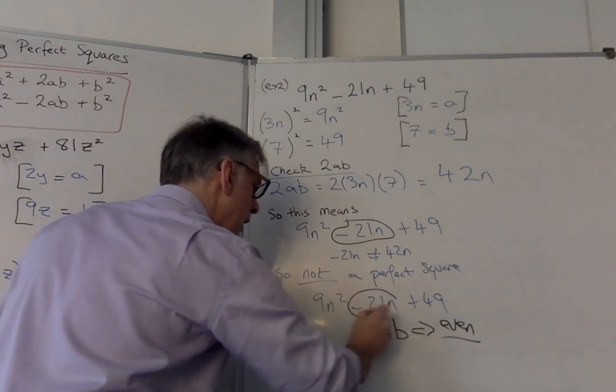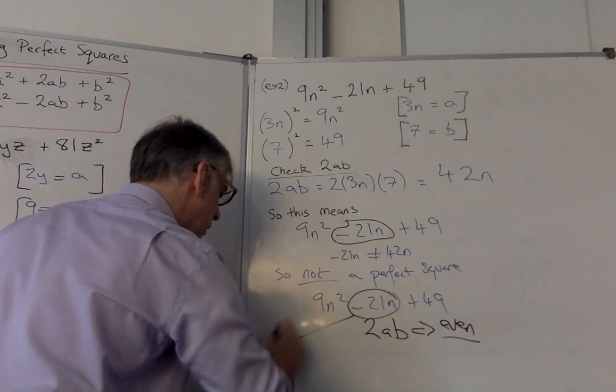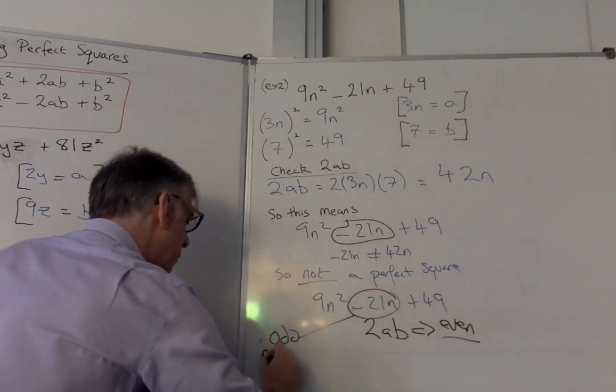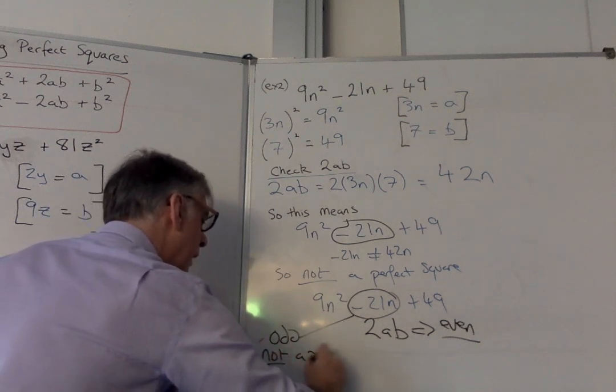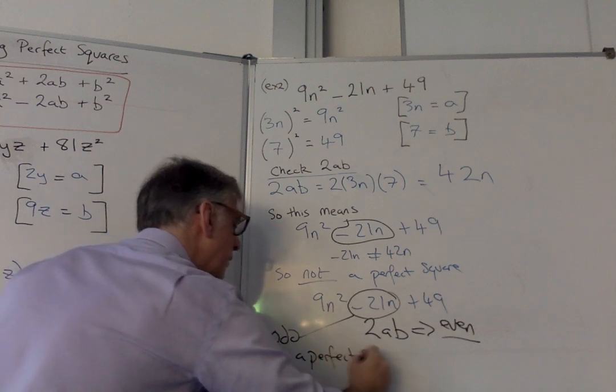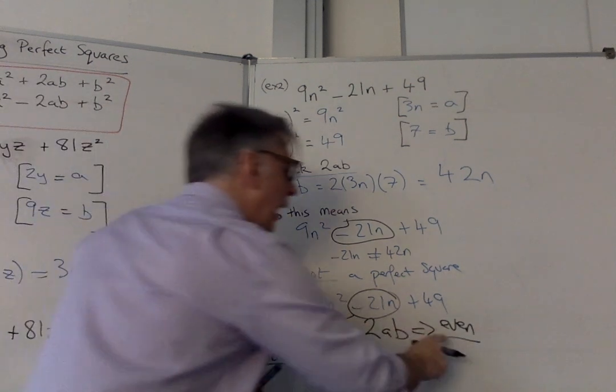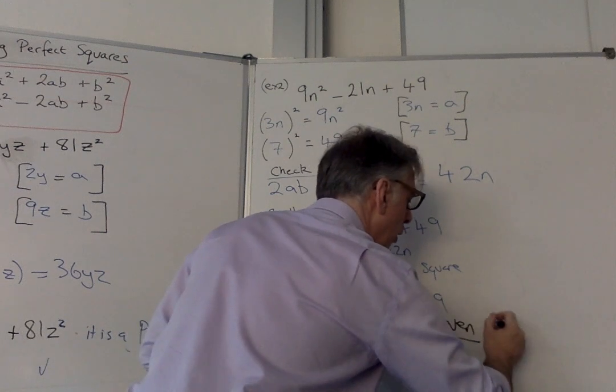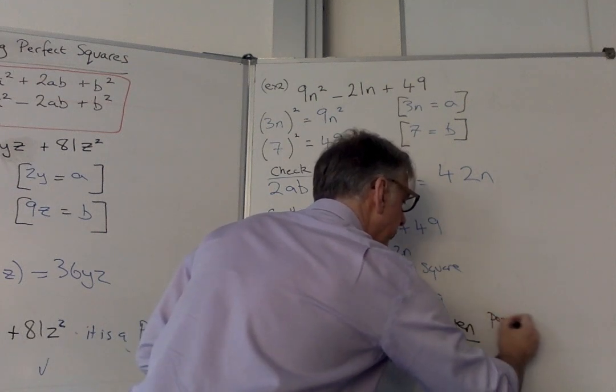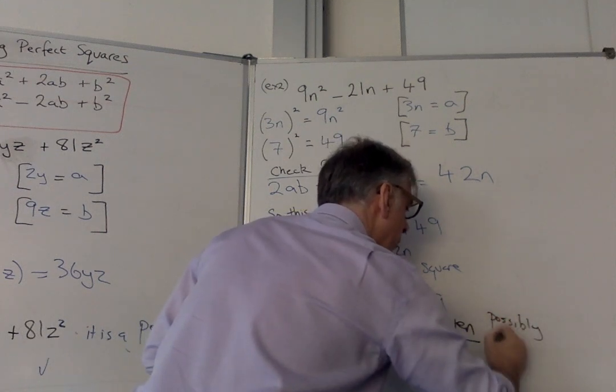And here, this is odd. So I could have seen it was not a perfect square straight away. And I didn't need to do any of the work in that. I just needed to say that. And if it's even, I know it's possibly a perfect square.